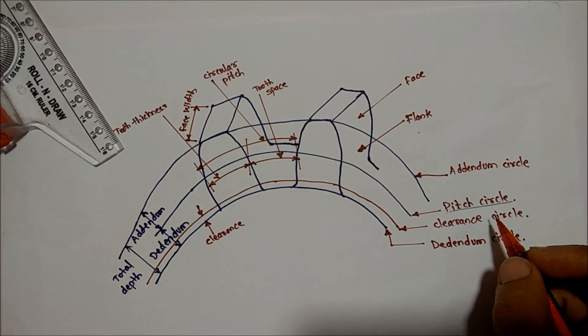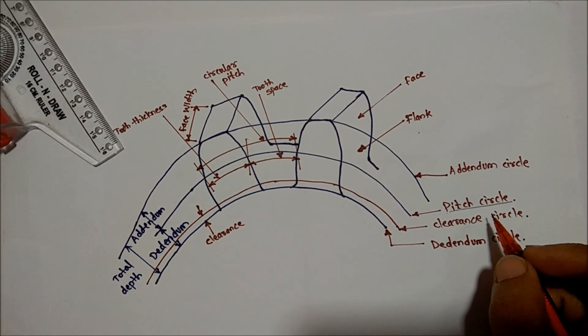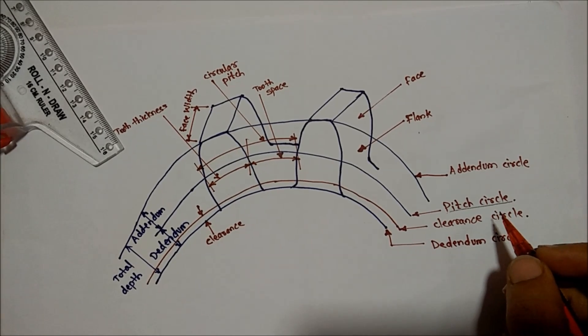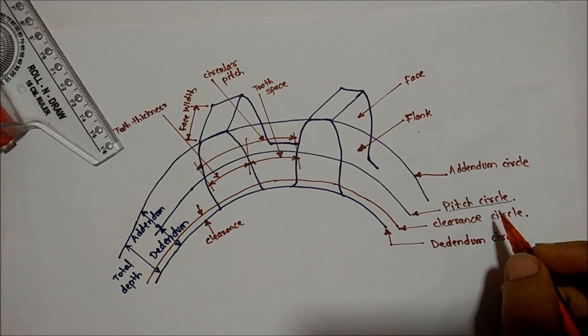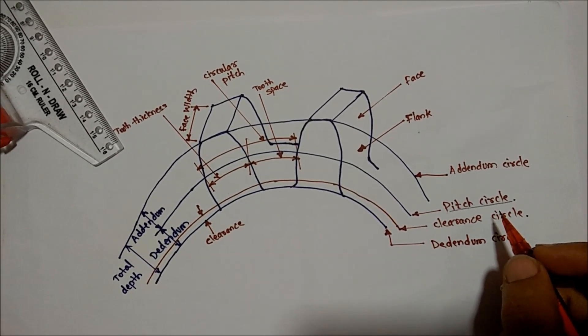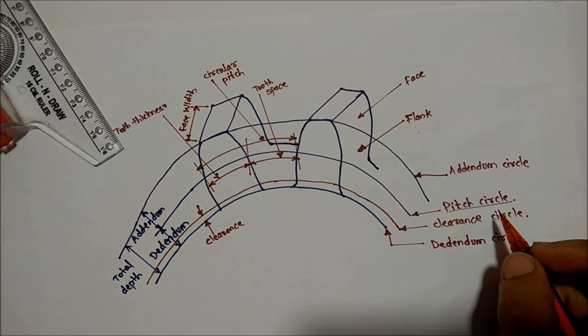The pitch circle is an imaginary circle which, by pure rolling action, gives the same motion as the actual gear.